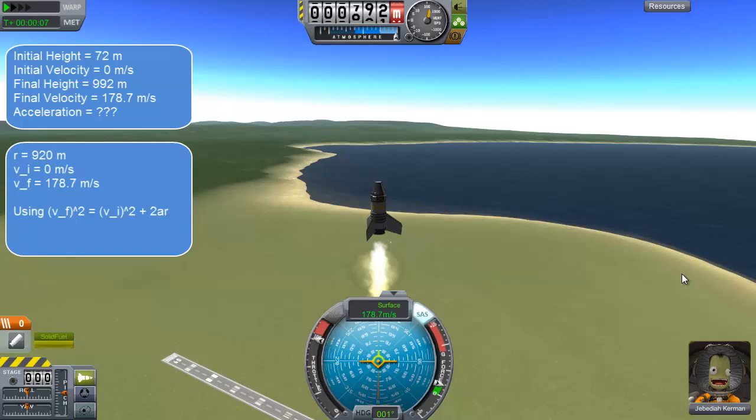Just need to rearrange that to get acceleration on its own. So if we do that, we get the final velocity squared minus the initial velocity squared over 2r, which equals our acceleration.